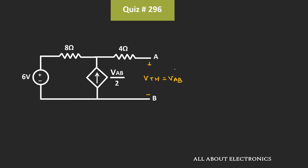Now, since these two terminals are open-circuited, no current is flowing through the 4 ohm resistor — we can say this current I is equal to zero. Because of that, the same voltage Vab will also appear across these two terminals, meaning the voltage across this dependent current source is also equal to Vab. Let's apply the KVL equation in this loop to find Vab.